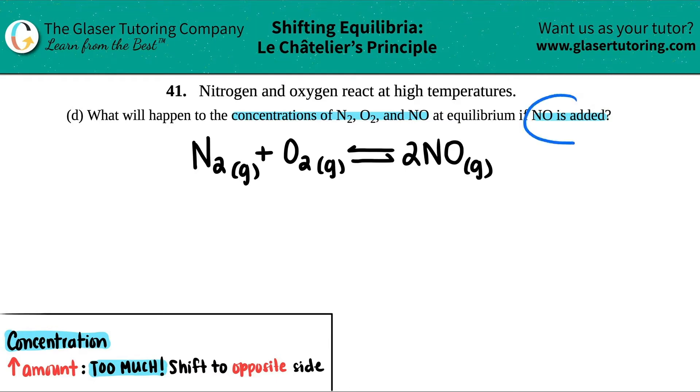So in order for this even to change the system, NO has to be a gas or aqueous. And I look here, this is a gas, so it's going to run by Le Chatelier's principles, and they're all gases, so they're all going to be affected.